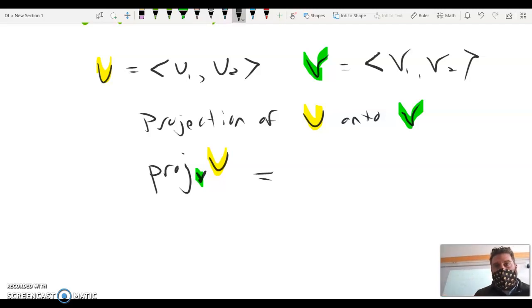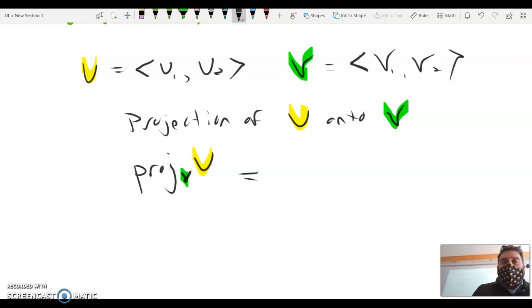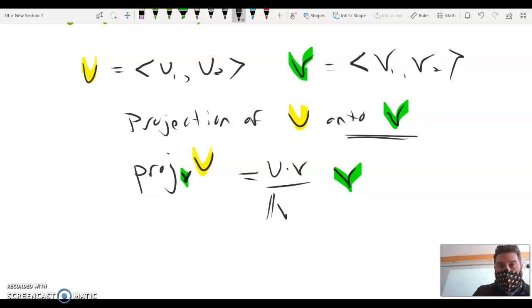The way we get a projection of one vector onto the other is we essentially scale v. Remember, it has to land on v. So it has to therefore be a scalar of v. Now, it can work in the same direction, or it can go in the opposite direction if that scalar is negative. But we're going to scale up or down v, and therefore land onto v. And the scalar that we end up using to multiply by the vector v is we take the dot product of u and v on top over the magnitude of v squared. So that is how we get a mathematical projection of one vector onto the other. So this vector, when we take a look at how one vector affects the other, it lands on the other, onto v.